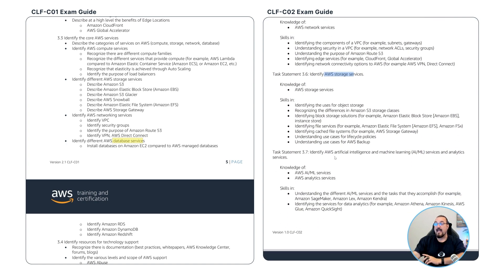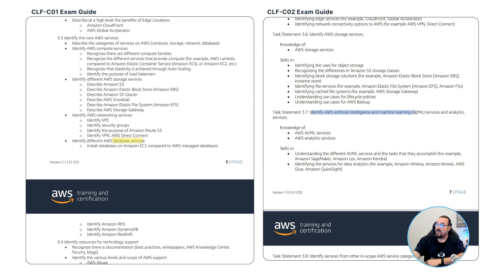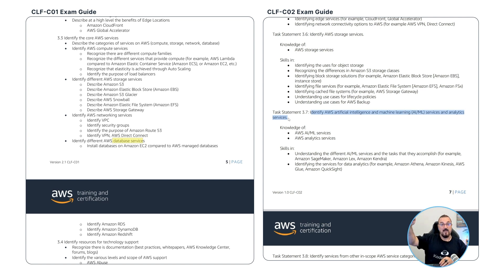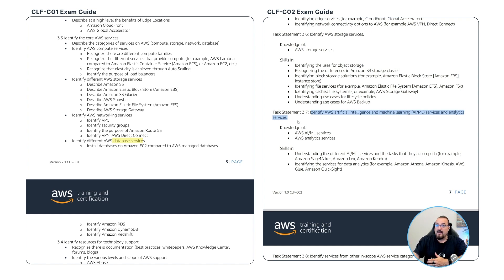They also added one other scope that wasn't part of the original CLF-01 exam: artificial intelligence and machine learning services and analytic services. This was previously not in scope for CLF-01, but it's now included for CLF-02. So we've got two significant changes: the Well-Architected Framework added to domain one, and machine learning and AI services added at a high level in domain three. You'll see an addition of a machine learning course inside the app.